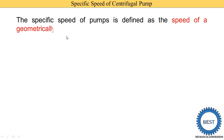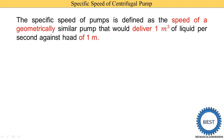Specific speed of a pump is defined as the speed of a geometrically similar pump. Geometrically similar means pumps have the same shape but different sizes — one pump could be small enough to hold in your hands, and another the size of a room. Both pumps deliver 1 cubic meter of liquid per second and a head of 1 meter. The speed required for both pumps under these conditions is known as the specific speed of a centrifugal pump.